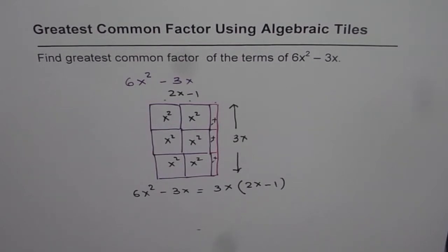So the width when arranged, when the polynomial is arranged in the form of a rectangle with the help of algebra tiles, then the width of that rectangle gives you the greatest common factor. Thank you.